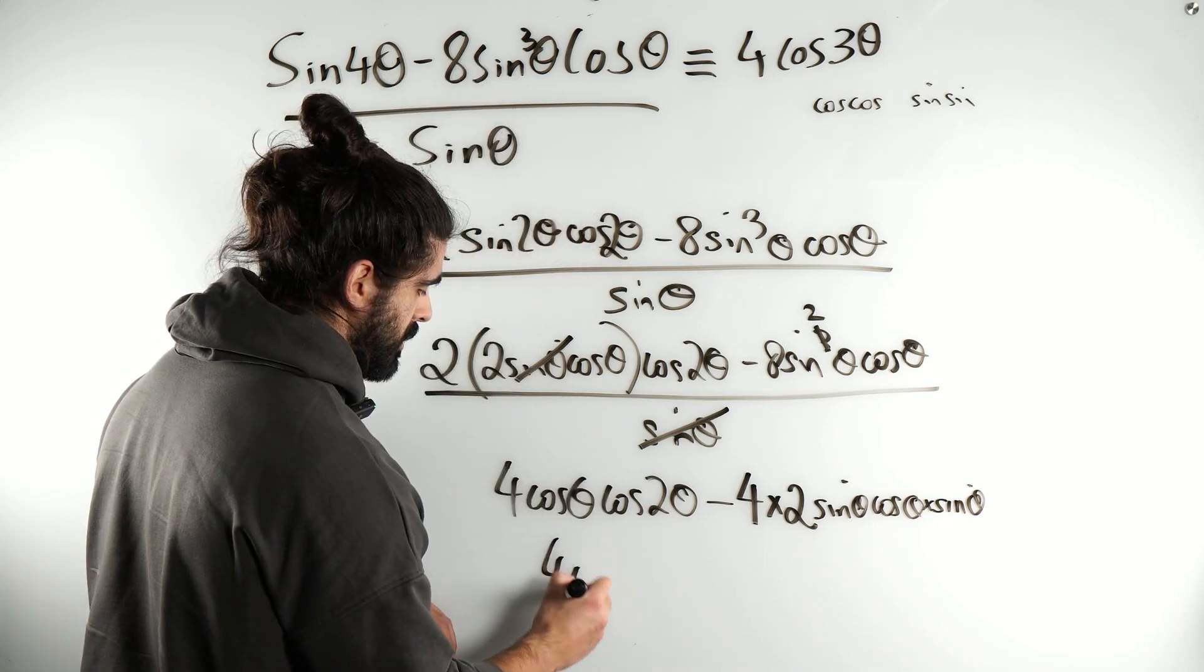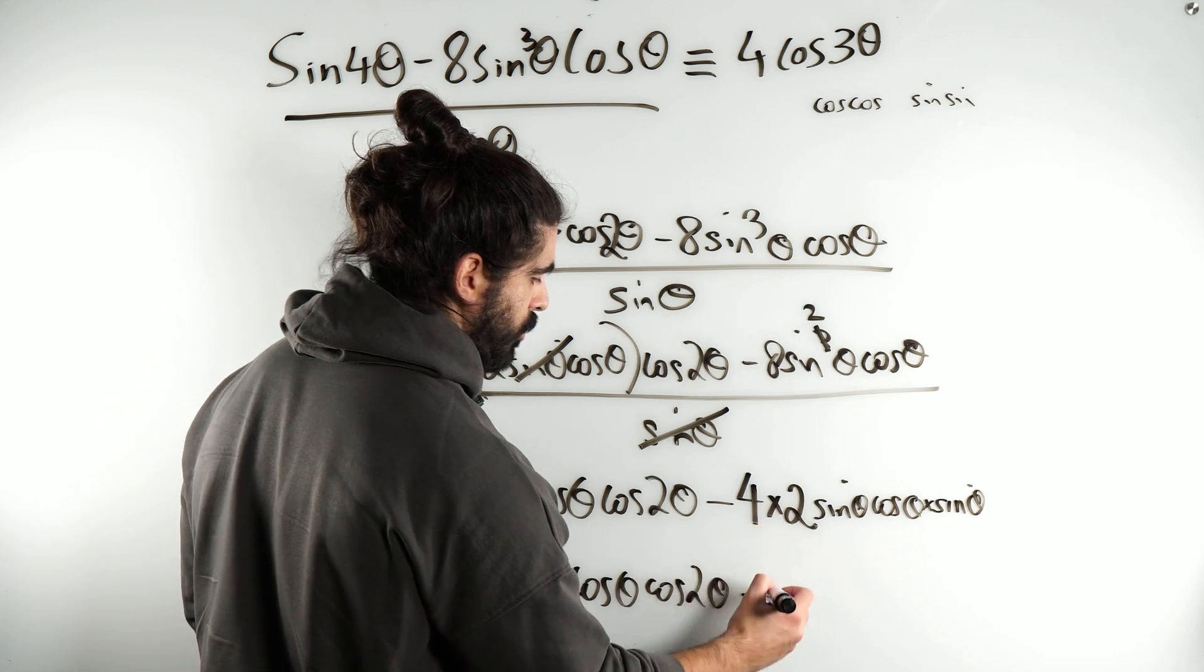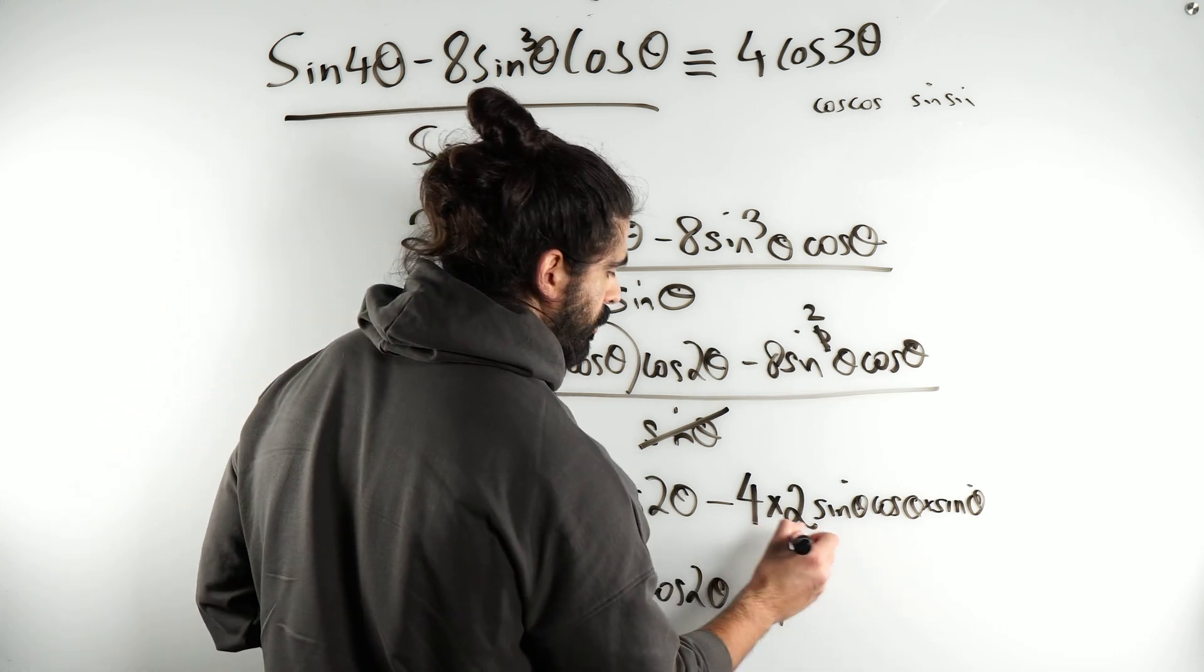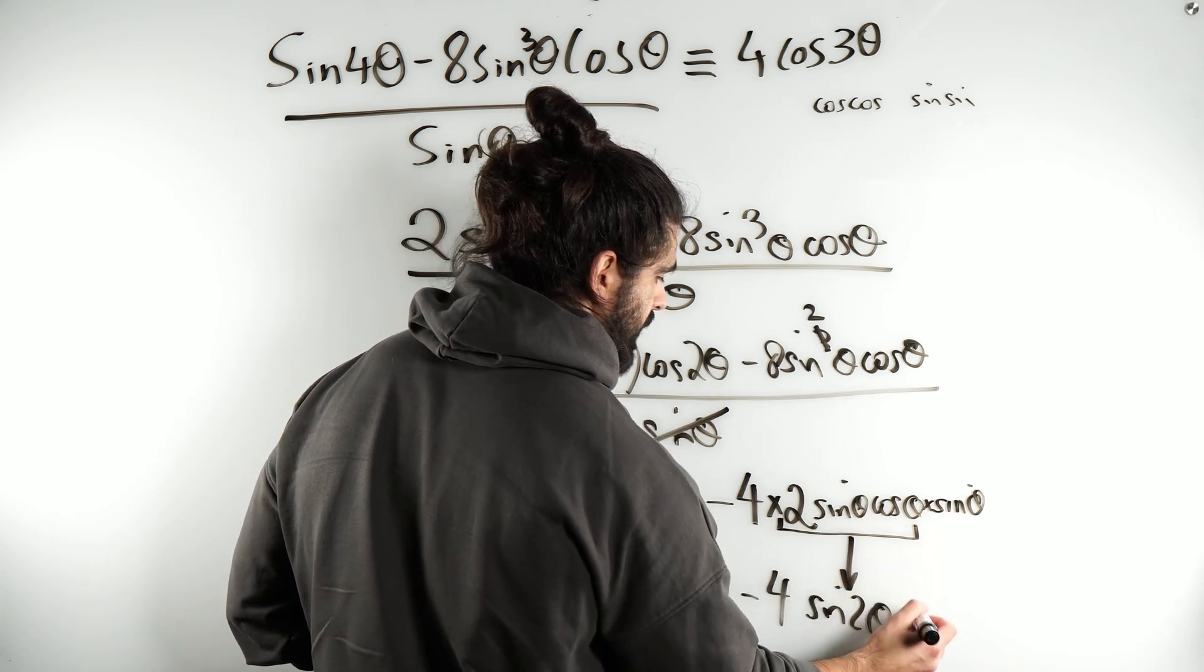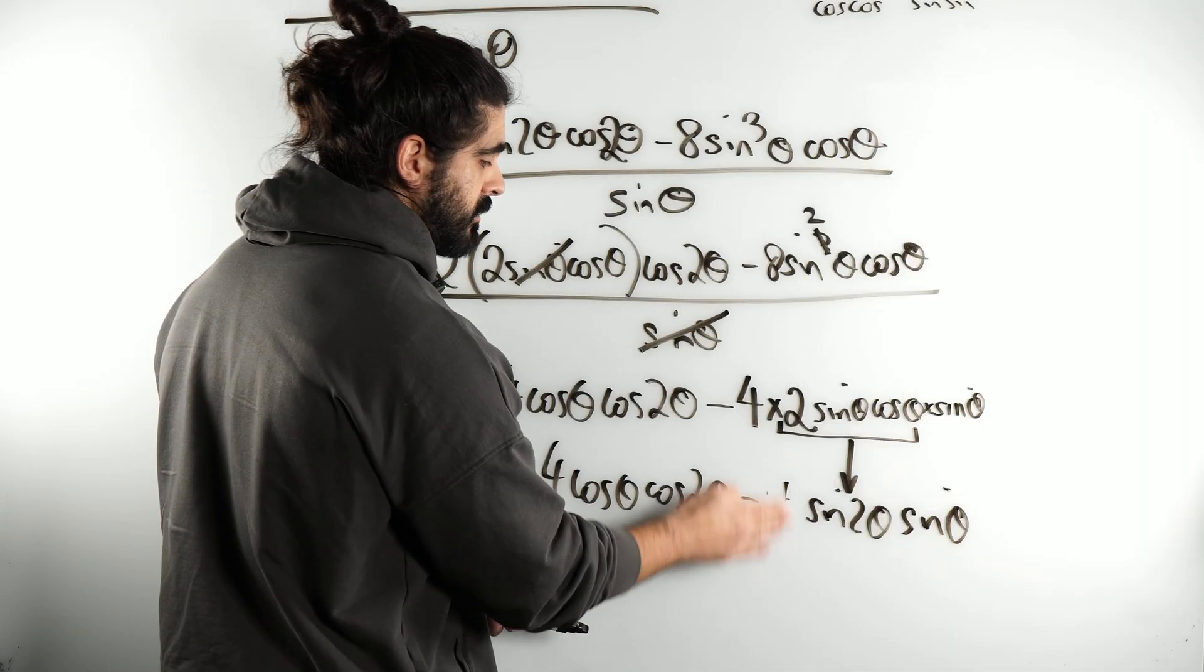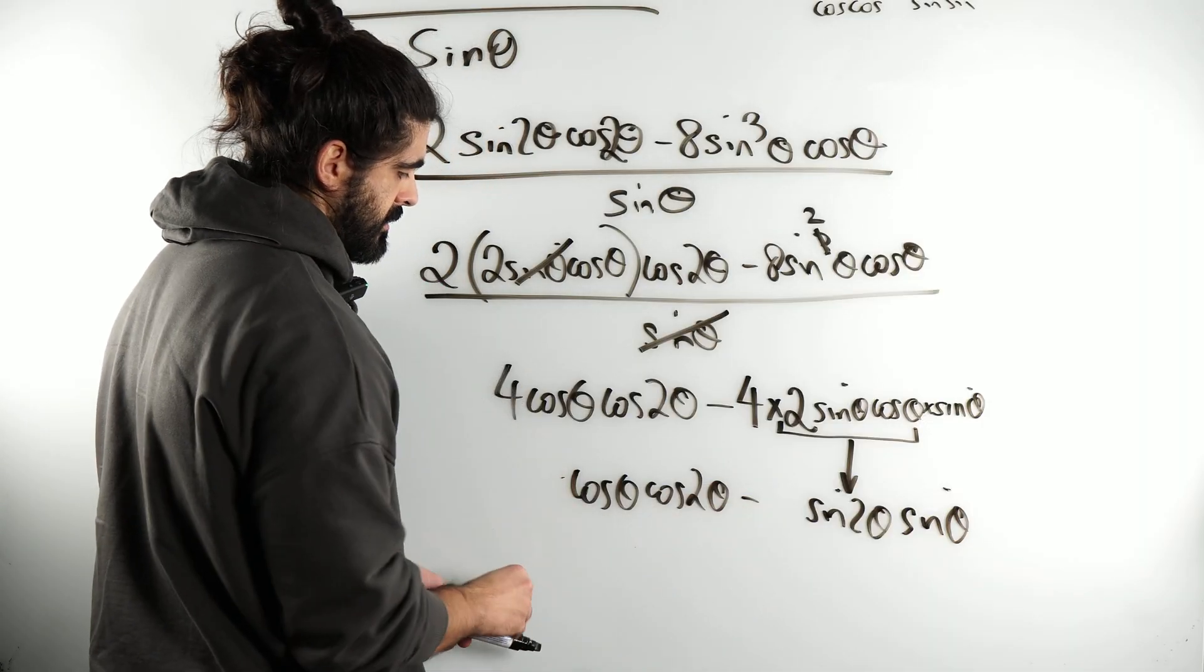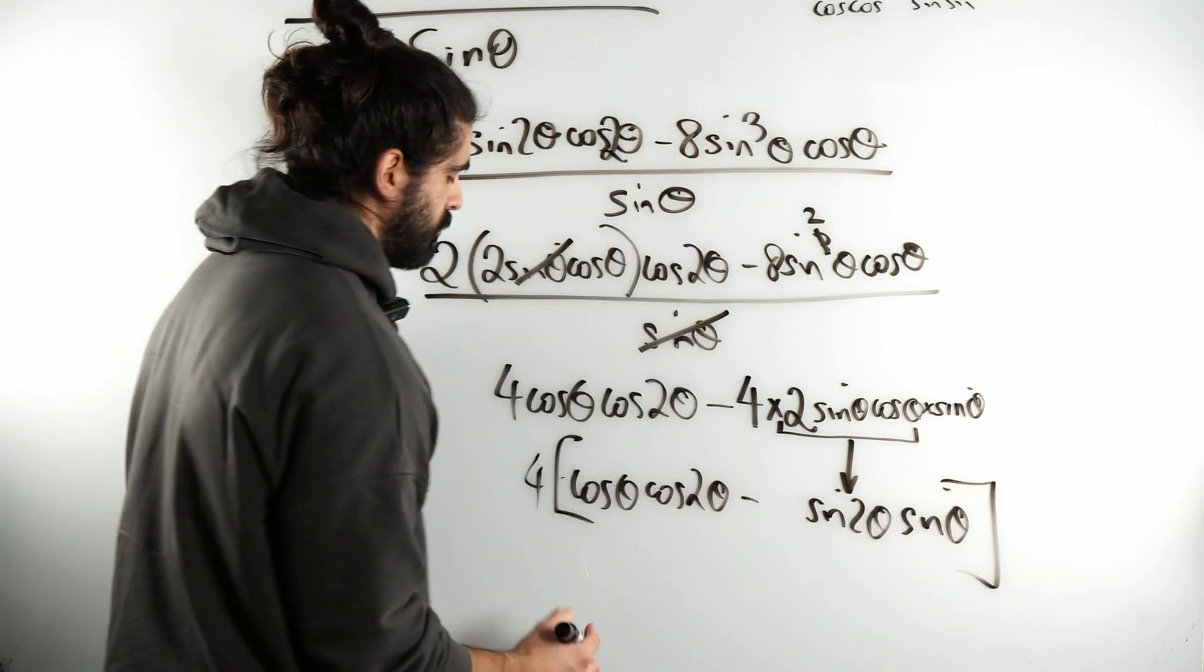So, I'm left with 4 cos theta cos 2 theta minus 4. Then this whole bit is sine 2 theta. And then we have sine theta. And there we go. You can factorize out the 4 as well if you want.